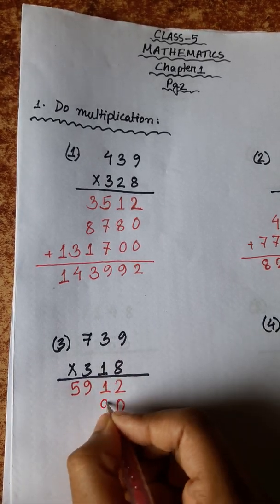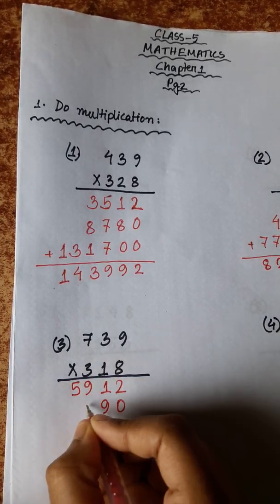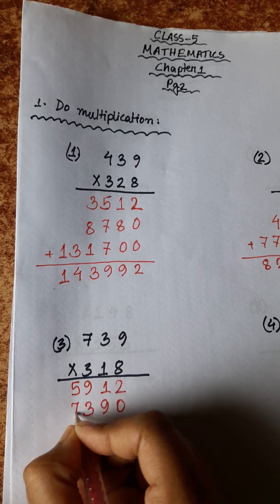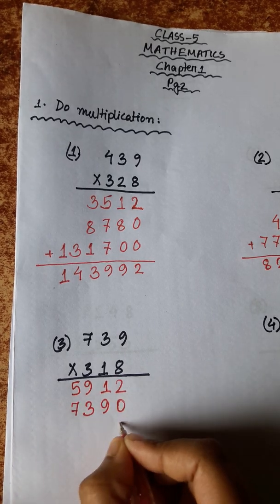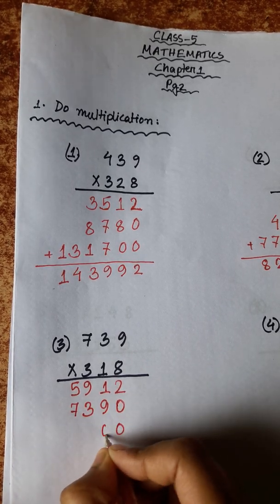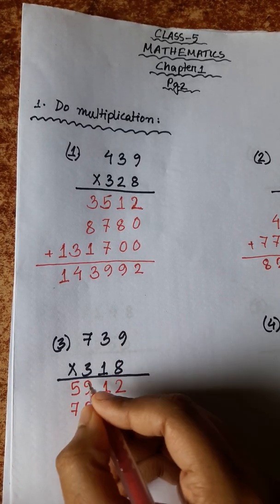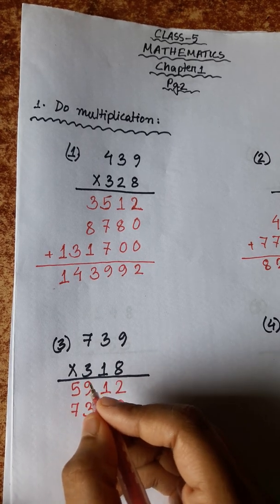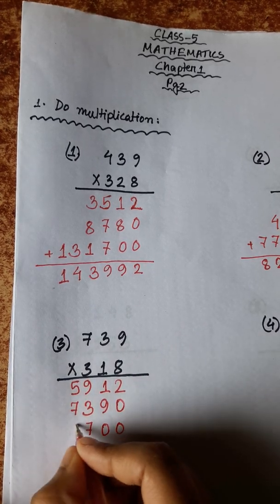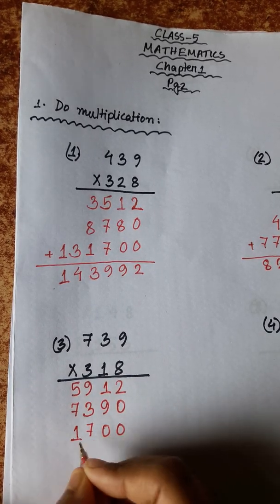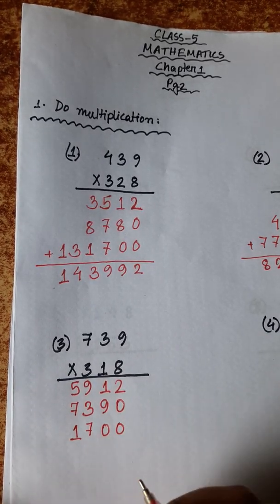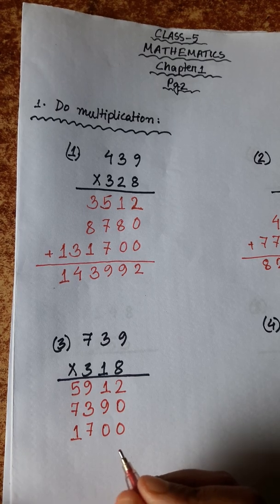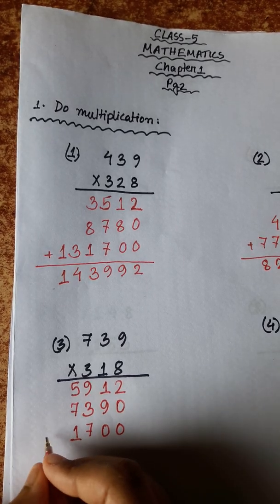9 ones are 9, 3 ones are 3, 7 ones are 7. 9 threes are 27, carry 2. 3 threes are 9, plus 2 is 11, carry 1. 7 threes are 21, plus 1 is 22.